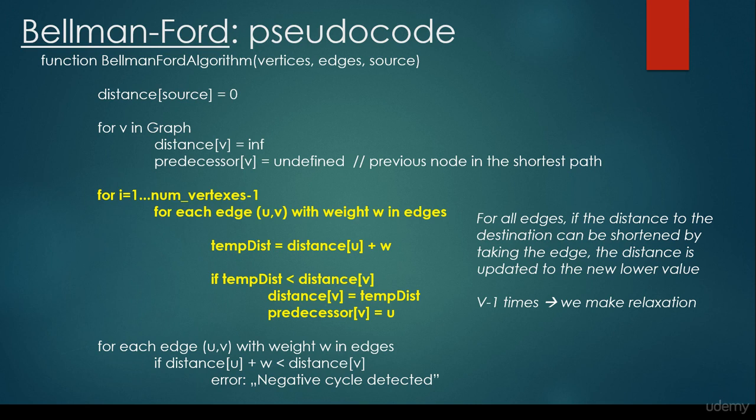This is what's called the relaxation phase. And it is the same as, you may recall, Dijkstra's algorithm, that we have the temporary distance, which is the distance to U plus the edge weight between U and V. And if this temp distance is smaller than the original distance, then we have to update the distance and we have to update the predecessor, as we have seen for Dijkstra's algorithm.